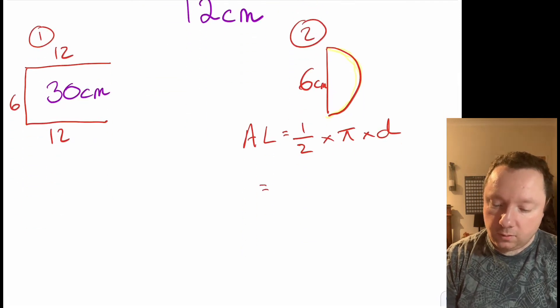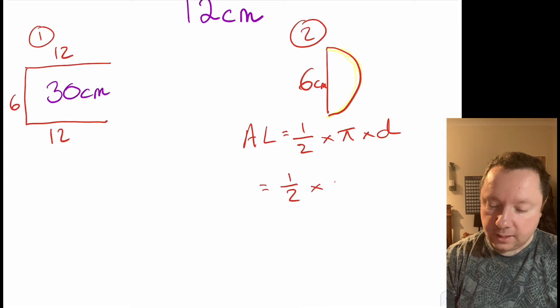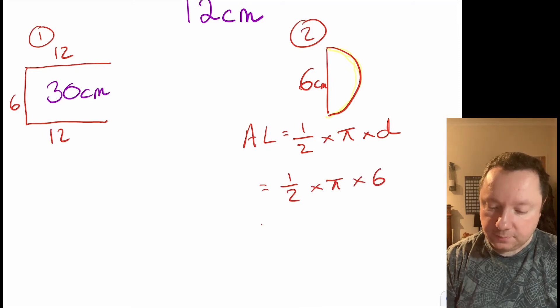So the arc length of this, well it's a half of a circle, so it's a half times pi times the diameter and that will just give us, remember, only this bit. It won't give us this bit which is good because we don't want that bit, it's not part of the perimeter. So we've got a half times pi times six which is three pi.